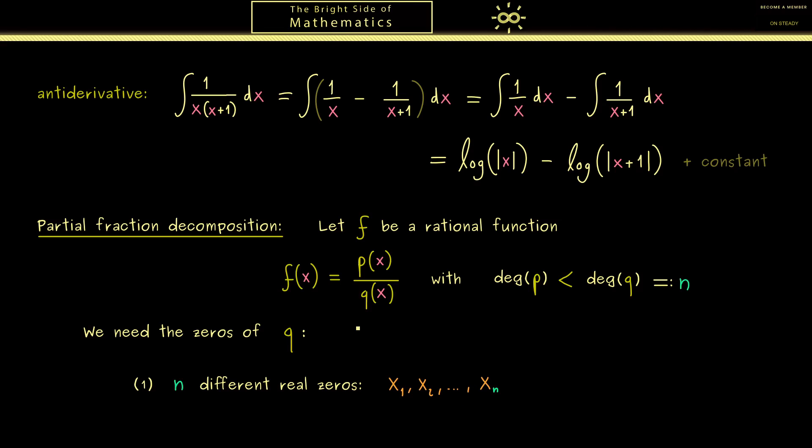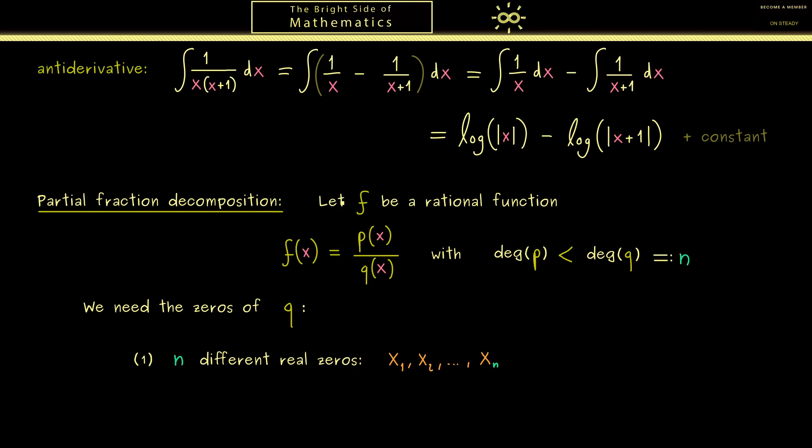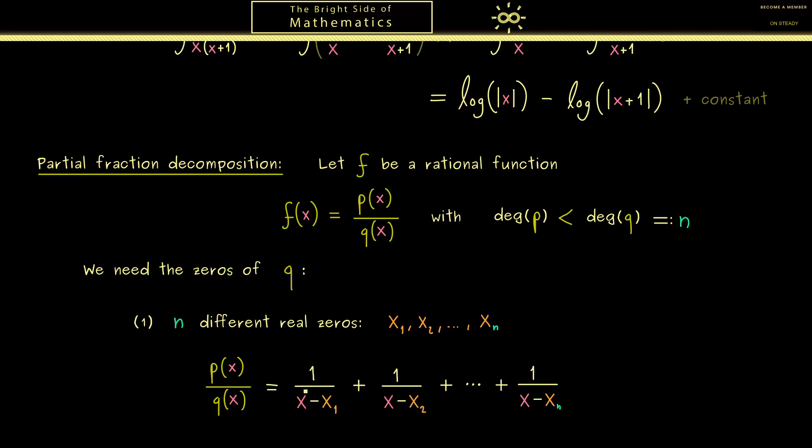Now please note this means that we can rewrite q with linear factors. And therefore the partial fraction decomposition looks like before. Therefore it should be possible to split up the rational function into n simple fractions.